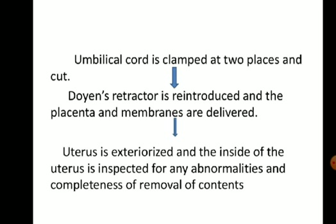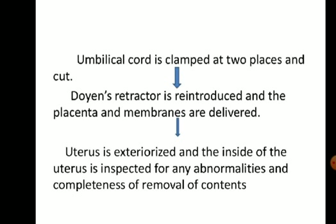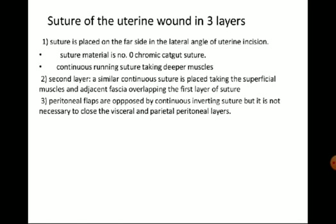The uterine cavity is inspected and cleaned with the help of mops. If there is any residual membrane or placenta, it is removed with the mop. Once the uterine cavity is clear, suturing is performed in three layers. First, the angles are secured with chromic catgut number 0 to control bleeding. Then a continuous running suture is taken over the deep muscles, followed by the superficial muscles. Suturing the peritoneal layer is not compulsory, but deep and superficial muscle layers are necessary.